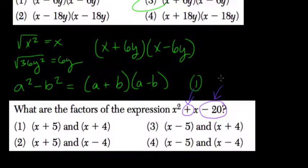So we need two factors of negative 20, right, that add to 1. And those factors are what?